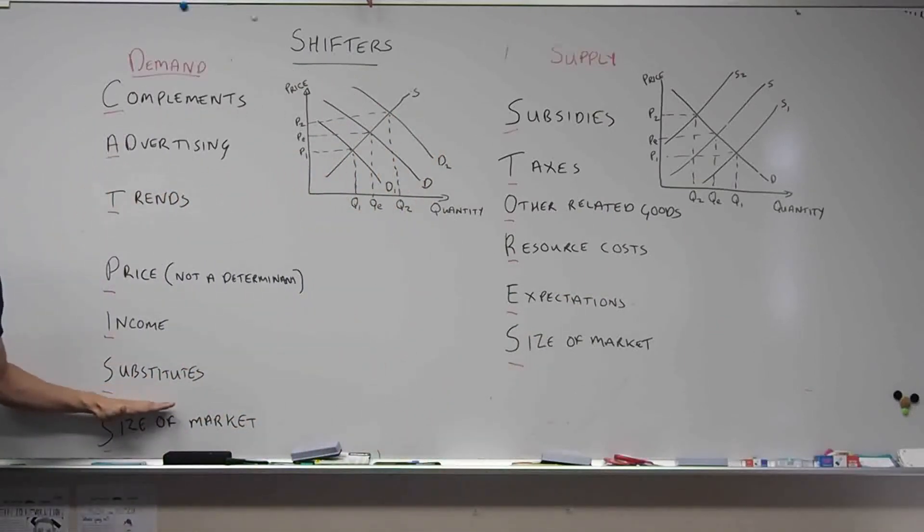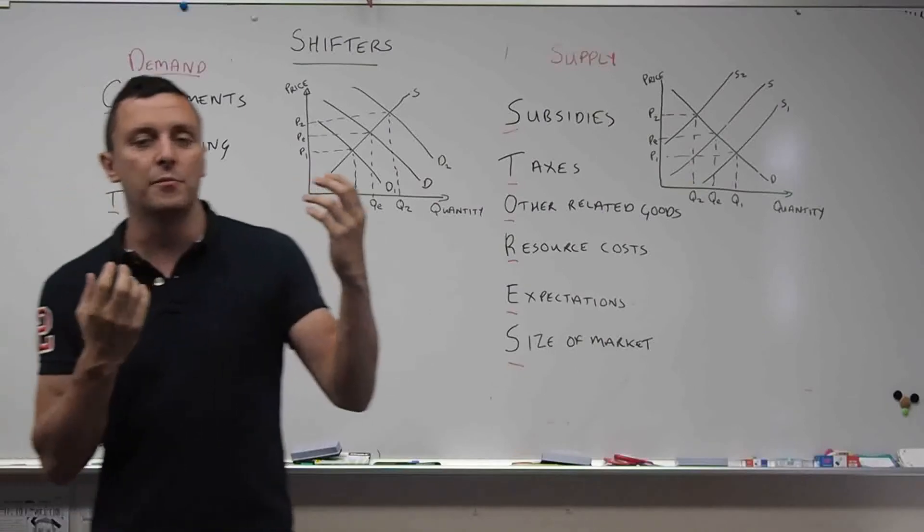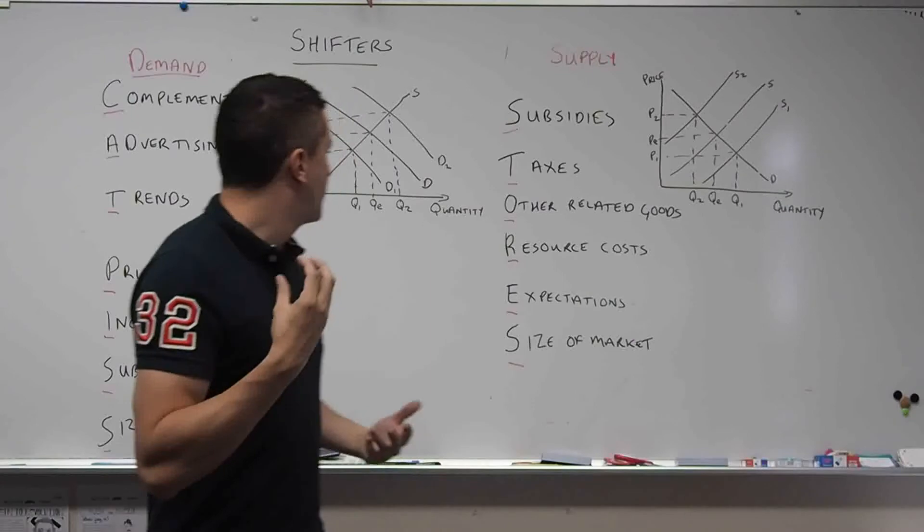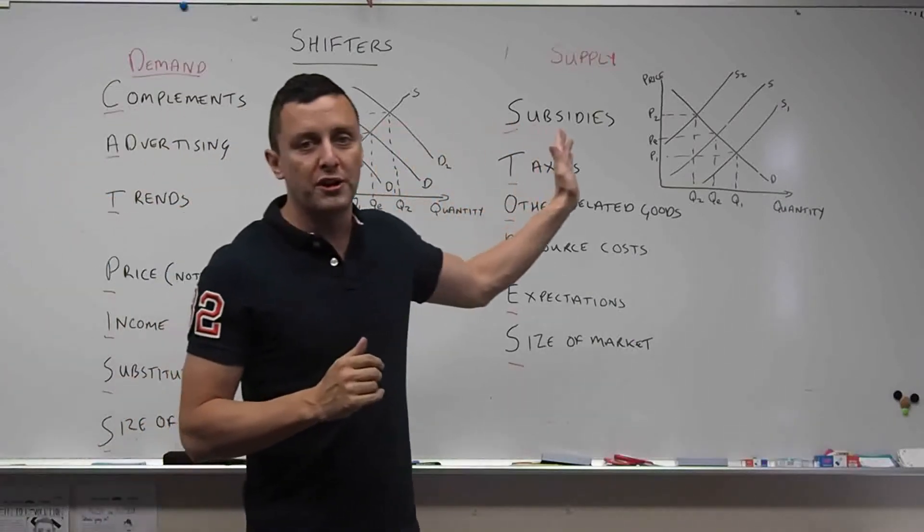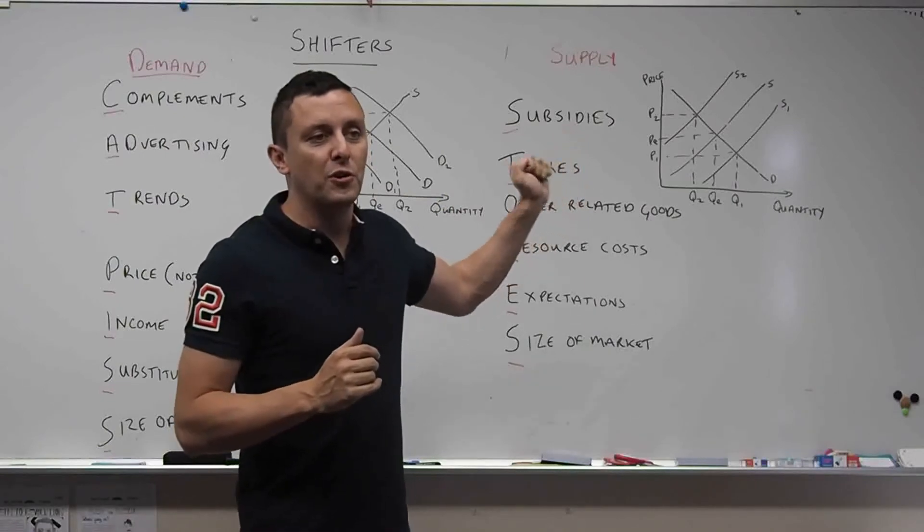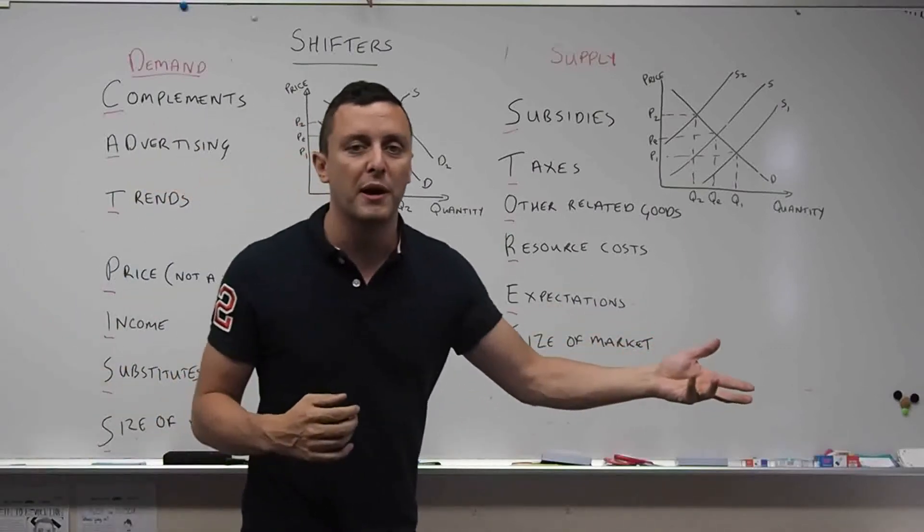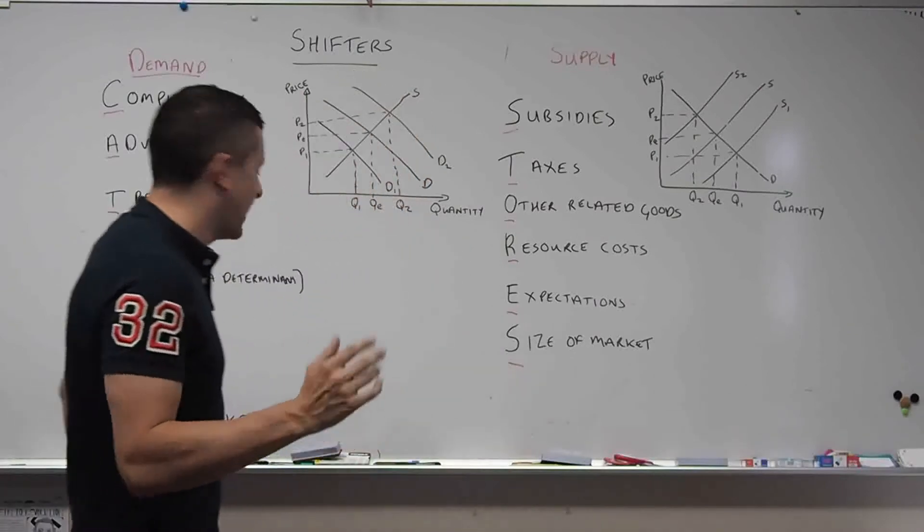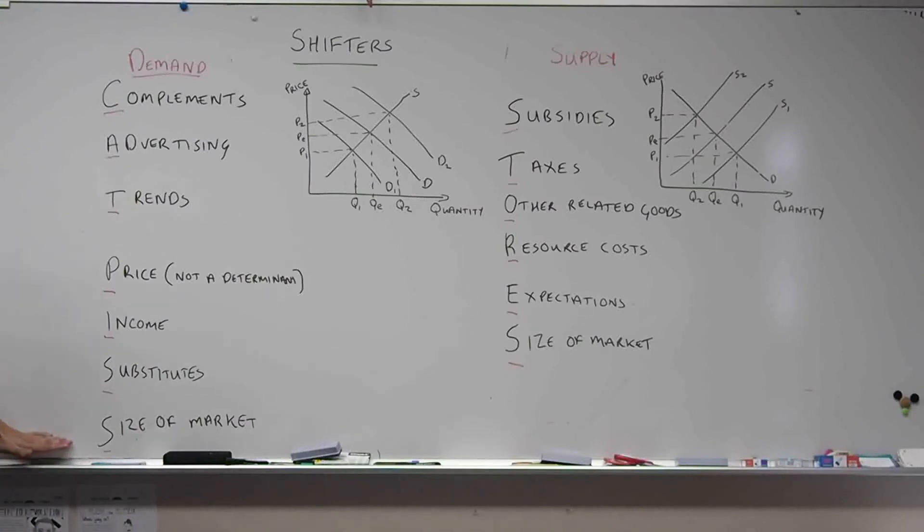Moving on, Substitutes. The price of a substitute will affect demand. So a direct substitute could be something like Pepsi Cola versus Coca Cola. So if the price of Pepsi goes down, then the demand for Coke is going to decrease. So the price of Pepsi goes down, more people are going to buy Pepsi and less people are going to buy Coca Cola. And the opposite is true.